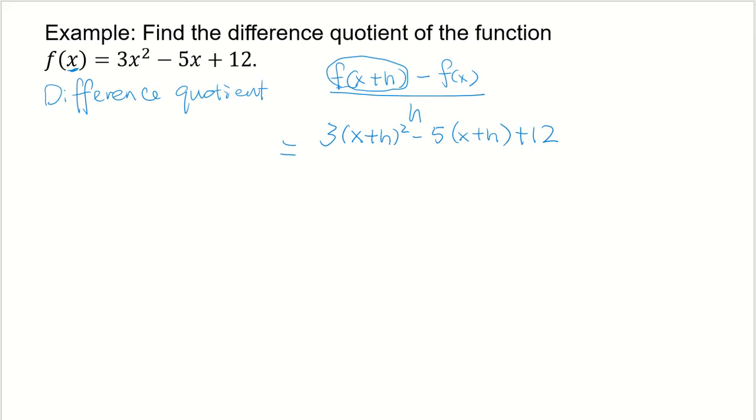All right, then minus f of x. f of x is 3x squared minus 5x plus 12. All right, then all over h.